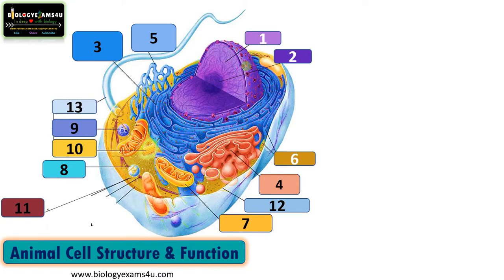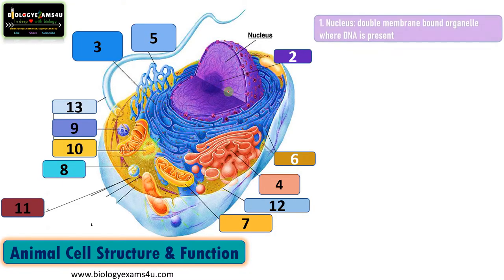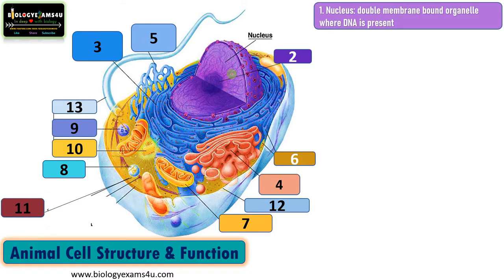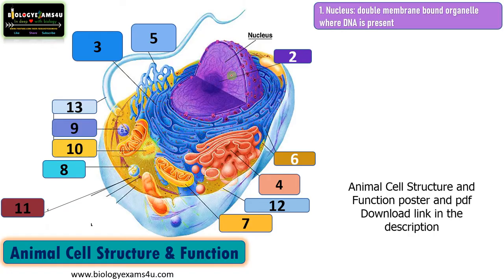As animal cell is a eukaryotic cell, it has a true nucleus. A true nucleus means the genetic material is bounded by a membrane. The nucleus is the largest organelle in the animal cell — a double membrane-bound organelle where DNA is present. This DNA has information for synthesis of all proteins required for the functioning of the cell, making it the controlling center of the cell. It has nuclear pores meant for exchanging materials between the nucleus and the cytoplasm.